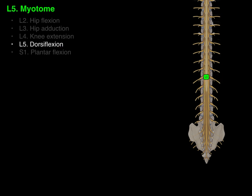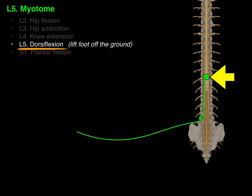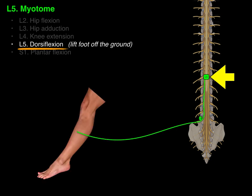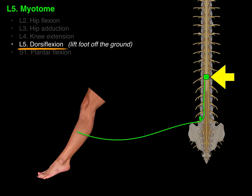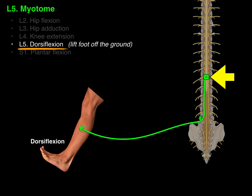Then there's dorsiflexion for L5, which is lifting the foot off the ground. There's the L5 spinal cord level and the L5 vertebra; the descending motor neuron goes out to the anterior crural muscles of the leg and causes that movement — dorsiflexion, lifting the foot off the ground.